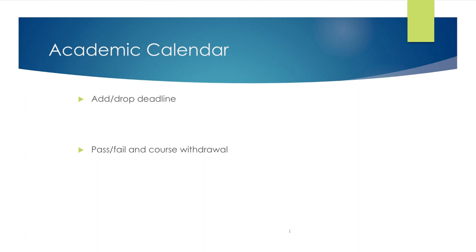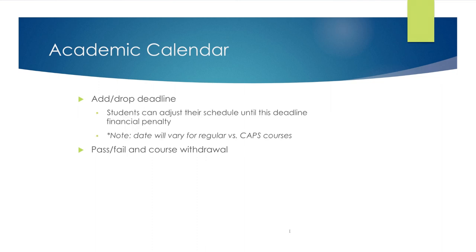It's important not only to be aware of key academic dates and deadlines, but also to understand the implications associated with them. Once a student registers for classes, they are able to add, drop, and swap classes without financial or academic penalty up until the add-drop deadline. This means a student can make schedule adjustments and the course will not appear on their transcript or bill. However, a student is financially and academically responsible for any course on their schedule after the add-drop deadline — it will appear on their transcript and they will be billed for it.